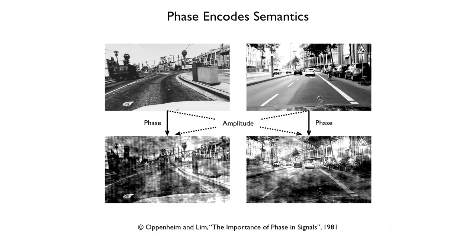It's known that if we take the Fourier transform of an image, semantic information is encoded in its phase. The two images at the bottom combine the phase of the images directly above and the magnitude of the images across. Despite the garble, the scene above is clearly recognizable.